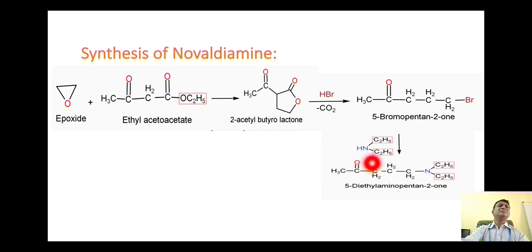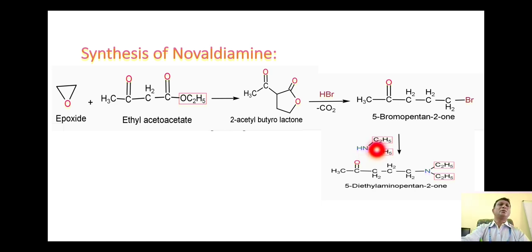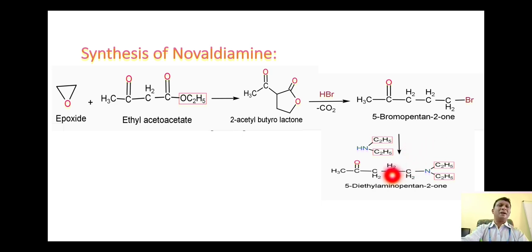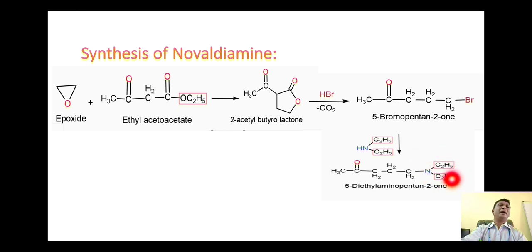This ketone derivative is then reacted with diethylamine. The amino group attacks this carbon in a nucleophilic substitution — nucleophilic alkyl substitution reaction. The hydrogen and the bromine are removed as HBr, giving formation of the ketone where on position number 5 we have the presence of a diethylamino group. This derivative is called 5-diethylaminopentane-2-one.